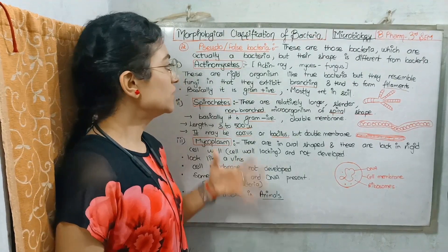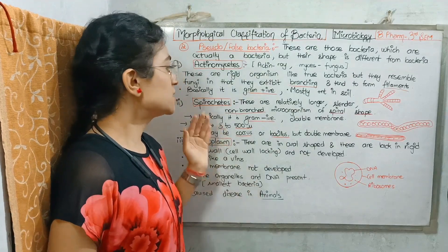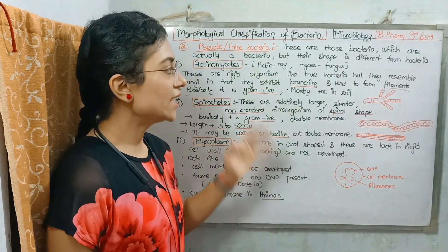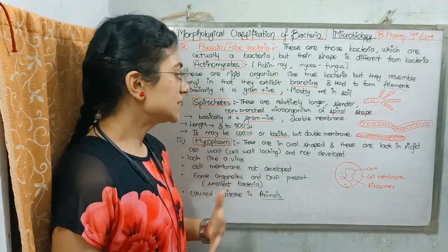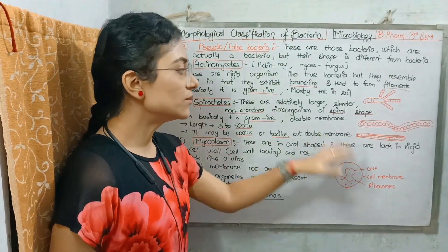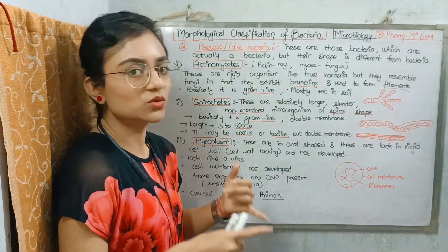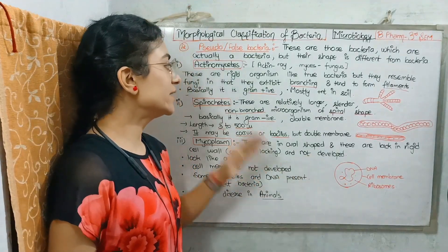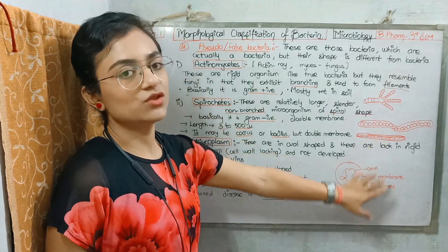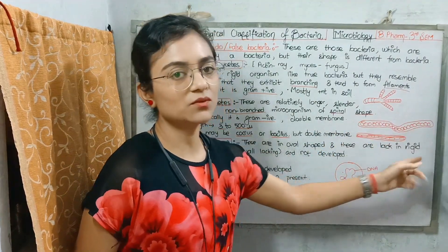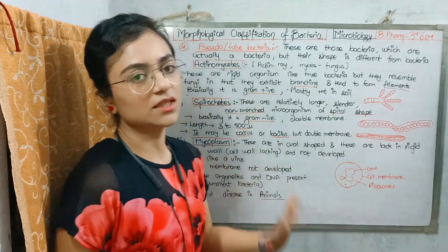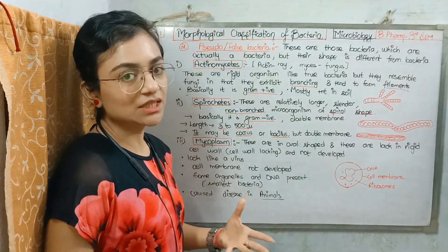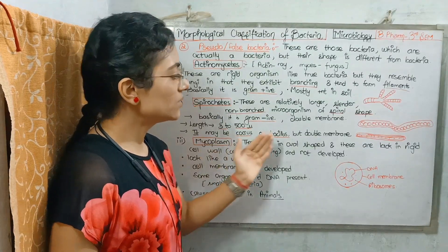After Actinomycetes, there are Spirochetes. Spirochetes are relatively long and slender and they are not branched like actinomycetes. They are in spiral shape. This is gram-negative bacteria with a double membrane. They can be in rod shape or spherical shape and have lengths of 3 to 500 microns.